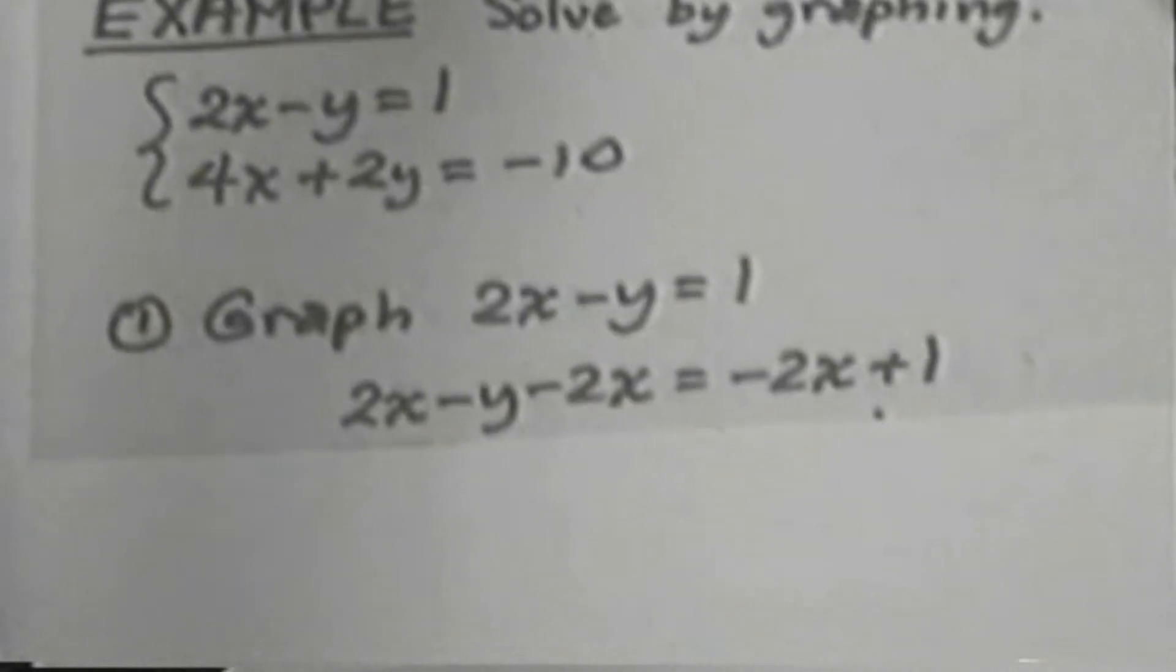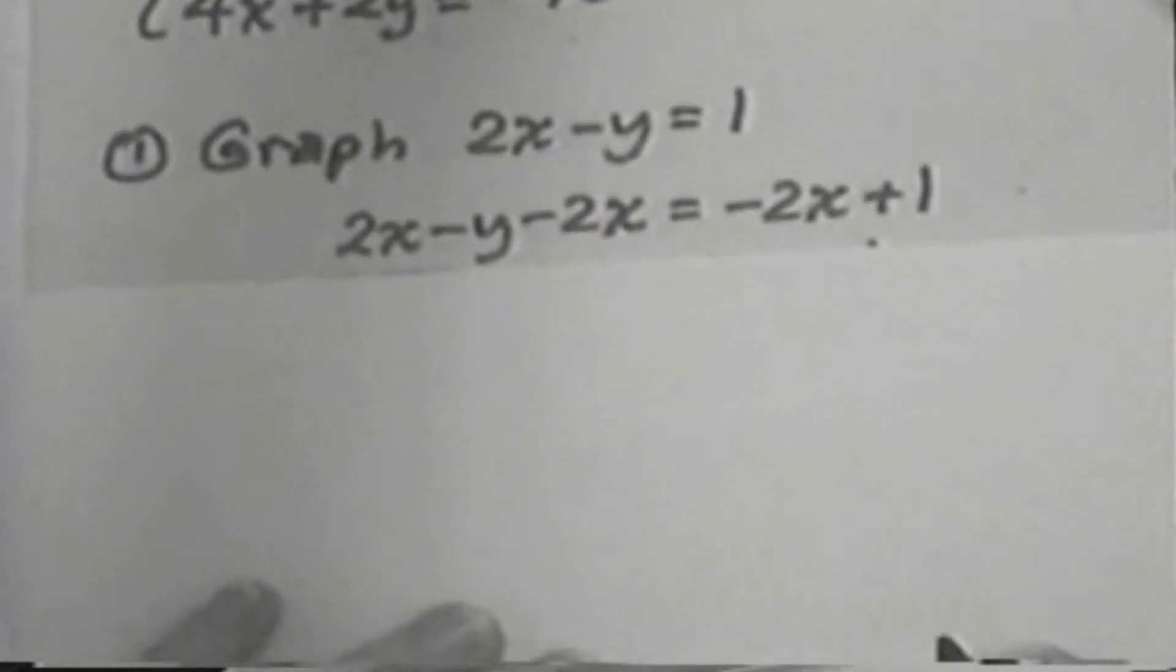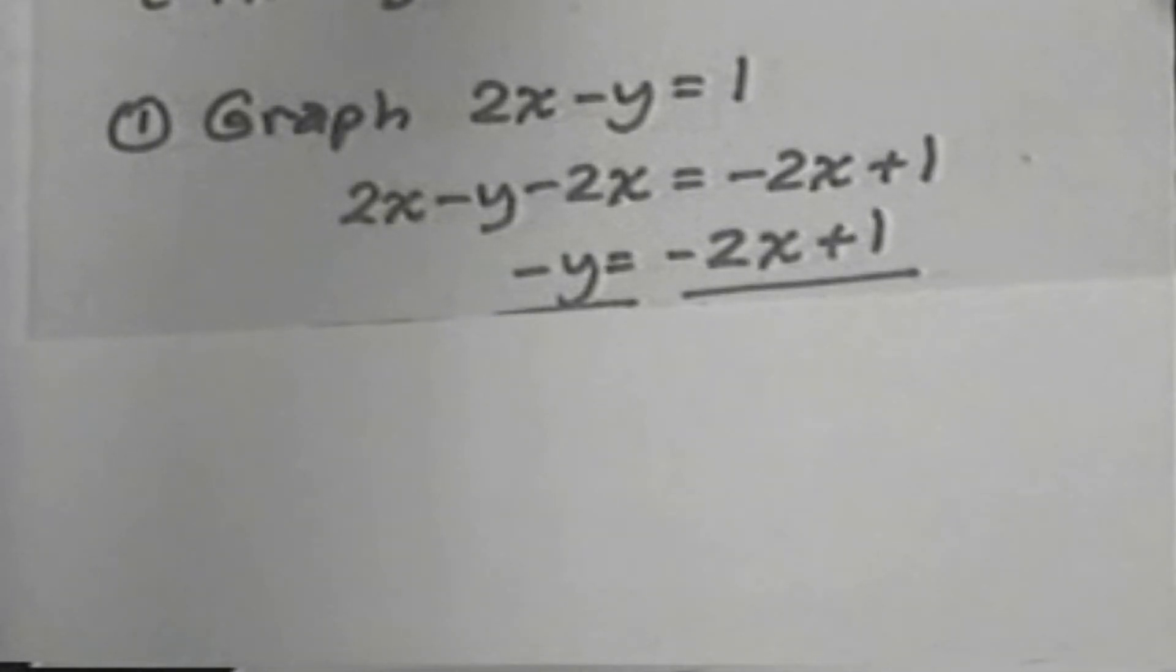Then we get 2x minus y minus 2x equals minus 2x plus 1. So we subtract 2x from both sides. Then we have minus y is equal to minus 2x plus 1.